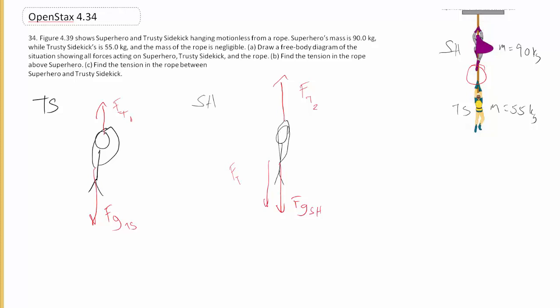This is where Newton's third law comes in. What it says is that the trusty sidekick is pulling down on the superhero by the rope. It turns out that the rope is pulling up on the trusty sidekick with the same amount that's pulling down on the superhero. Those are the same force.